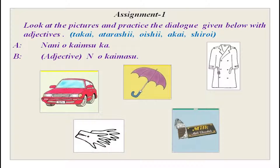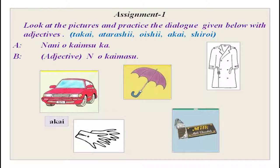As you know, adjective tells you about the noun. So adjective noun wo kaimasu. Whatever the picture, please put the adjective for that picture and use it. What do we have over here? Well, akai kuruma wo kaimasu. In this manner you can actually do a small dialogue, talk to your friend, ask your friend and your friend can answer, or your friend can ask you and you can look at the picture and answer.